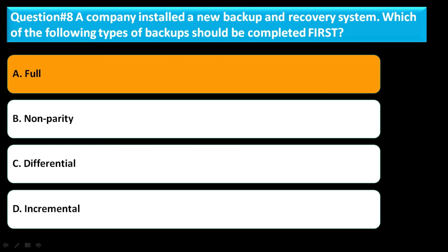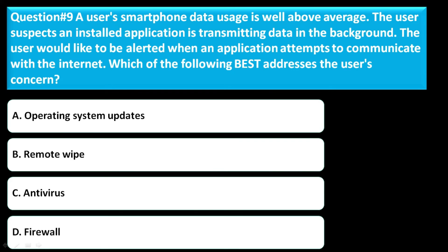Question number nine: a user's smartphone data usage is well above average. The user suspects an installed application is transporting data in the background and would like to be alerted when an application attempts to communicate with the internet. Which of the following best addresses the user's concern? Option A: operating system updates. Option B: remote wipe. Option C: antivirus. Option D: firewall. The correct answer is option D — firewall.